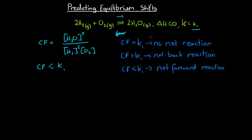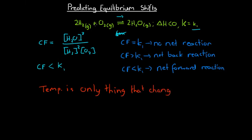There's another thing to consider when looking at shifts to equilibrium: the effect of temperature. It's very important to realize that temperature is the only thing that can change an equilibrium constant for a reaction. No matter what, for this reaction the equilibrium constant equals K. However, we can change K by changing the temperature — for every reaction there will be a different equilibrium constant at a different temperature. How does temperature change K?